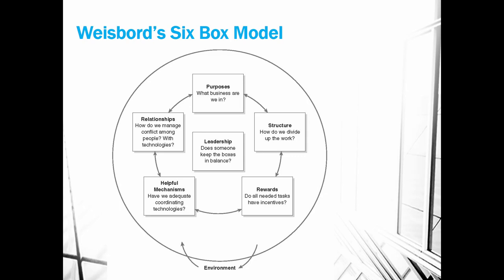Weisbord also says about the Six Box Model that each box has a formal component and an informal component. There's a formal structure and an informal way of getting things done. There are formal rewards like compensation plans, and informal rewards — what people really get recognized or appreciated for. So this is another example of systems theory.